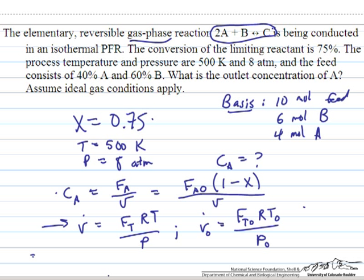So we have 3 moles on the left hand side going to 1 mole on the right hand side, and it turns out as we will see that this can affect our volumetric flow rate through the reactor, and thus our concentration.